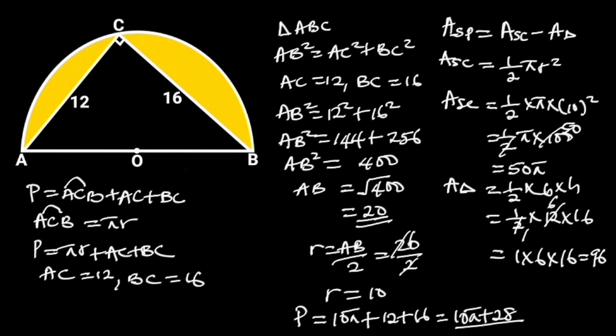Now we know the area of the semicircle and the triangle. The area of the shaded portion is equal to 50 pi minus 96 square units.